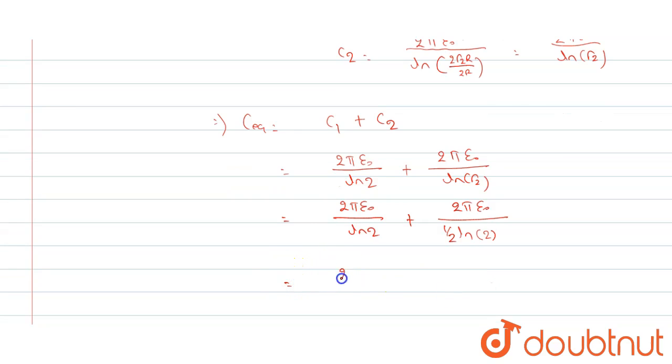This becomes 2π ε₀ divided by ln of 2 plus this 2 goes to numerator and multiplied, that is 4π ε₀ divided by ln of 2.